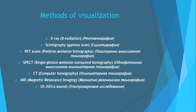Methods of visualization of the chest include: X-ray — I will write down these names in Russian so when you go to a hospital you will not be confused. Also: scintigraphy or gamma scan, PET scan (positron emission tomography), SPECT (single photon emission computer tomography), CT (computer tomography), MRI (magnetic resonance imaging), and ultrasound.